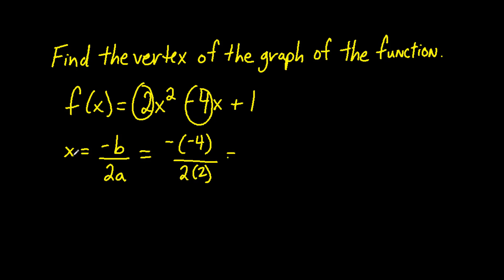Simplifying, the opposite of negative 4 is 4 and 2 times 2 is 4. So this will simplify to 4 divided by 4 is 1. So the x-coordinate of our vertex is 1. Now we just need to find the y-coordinate.